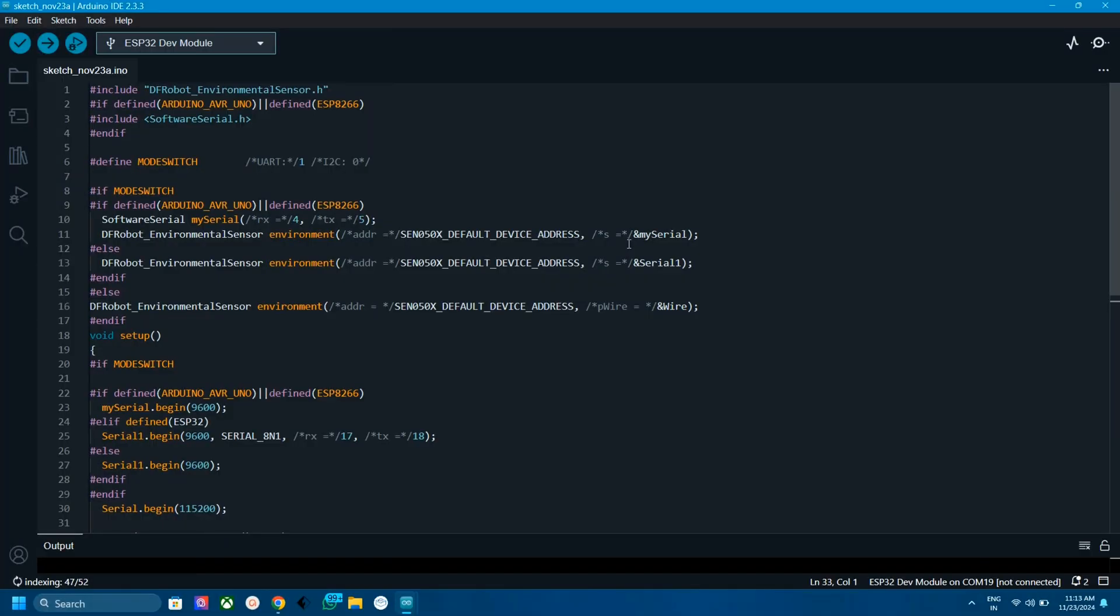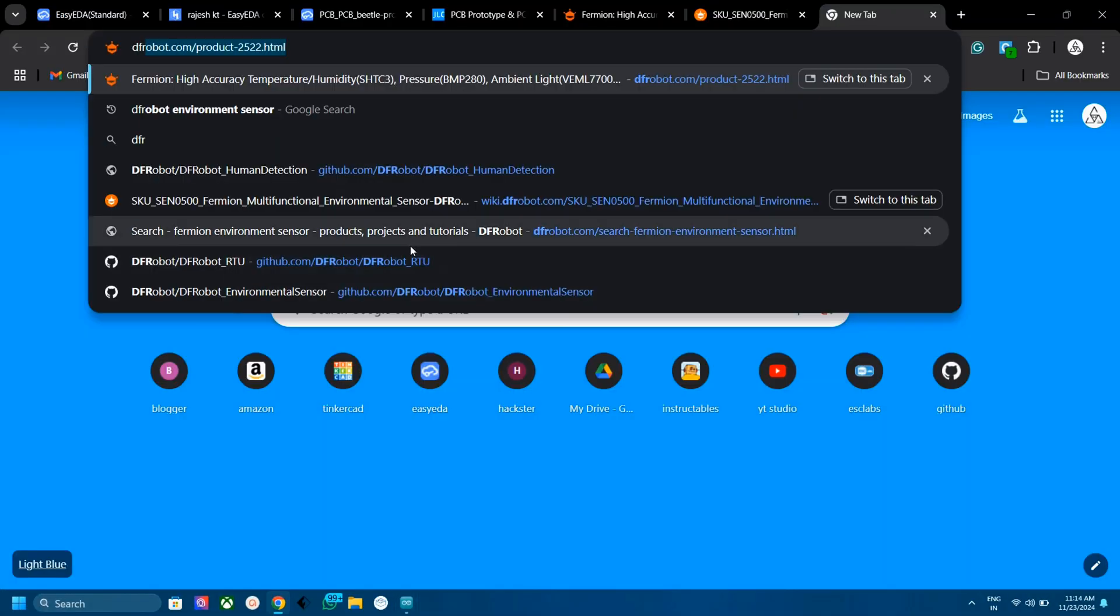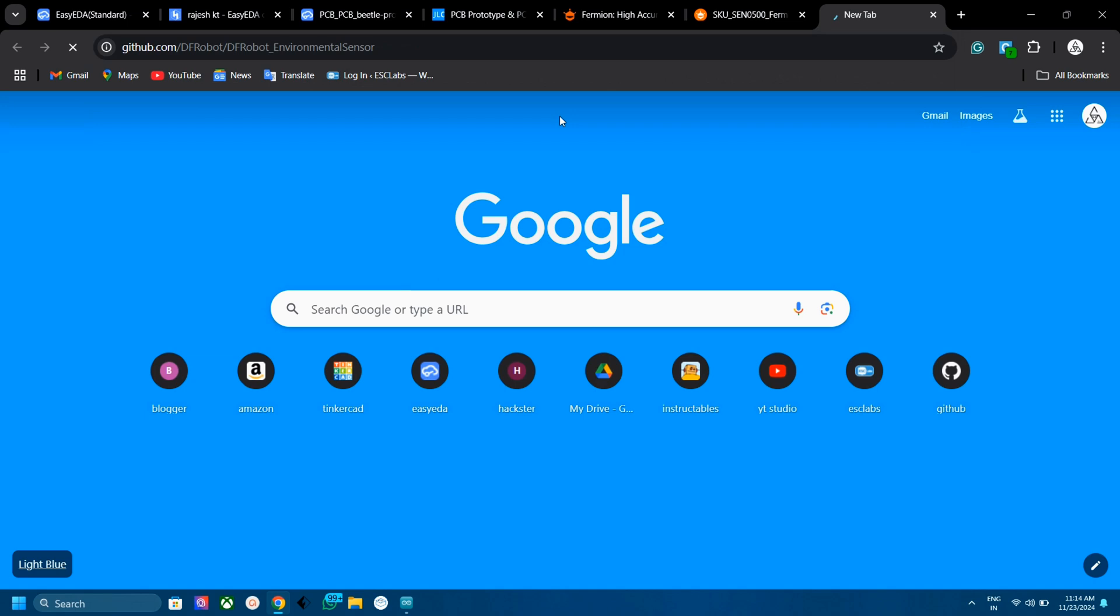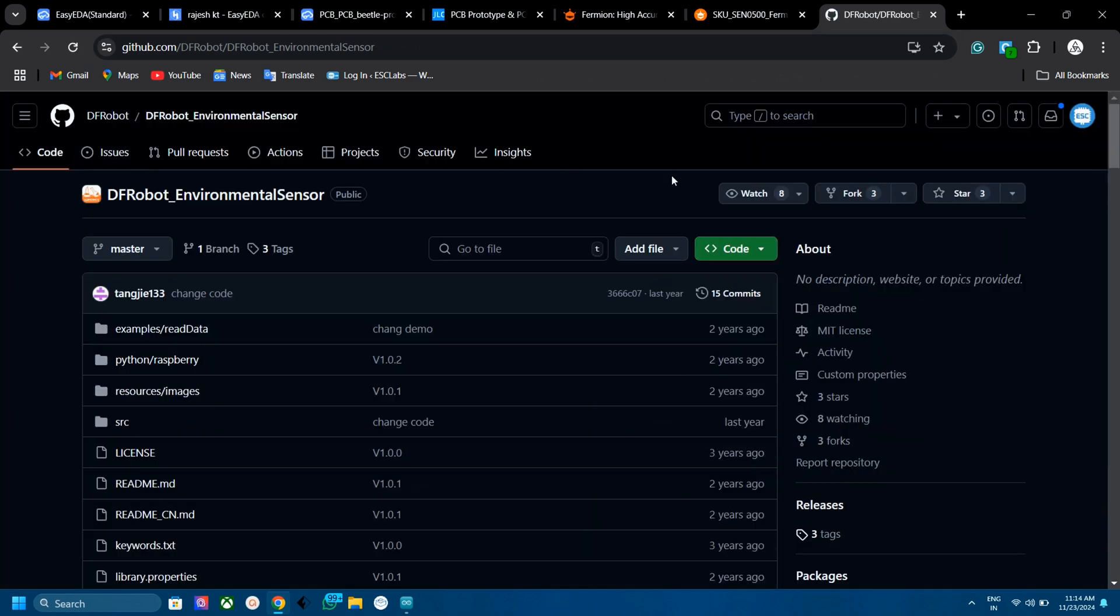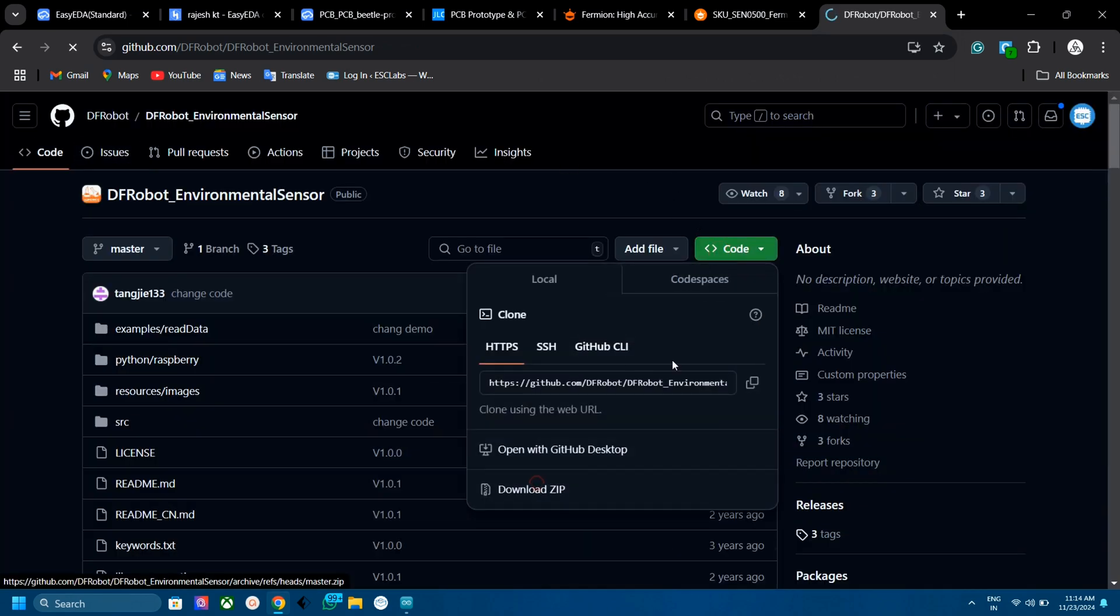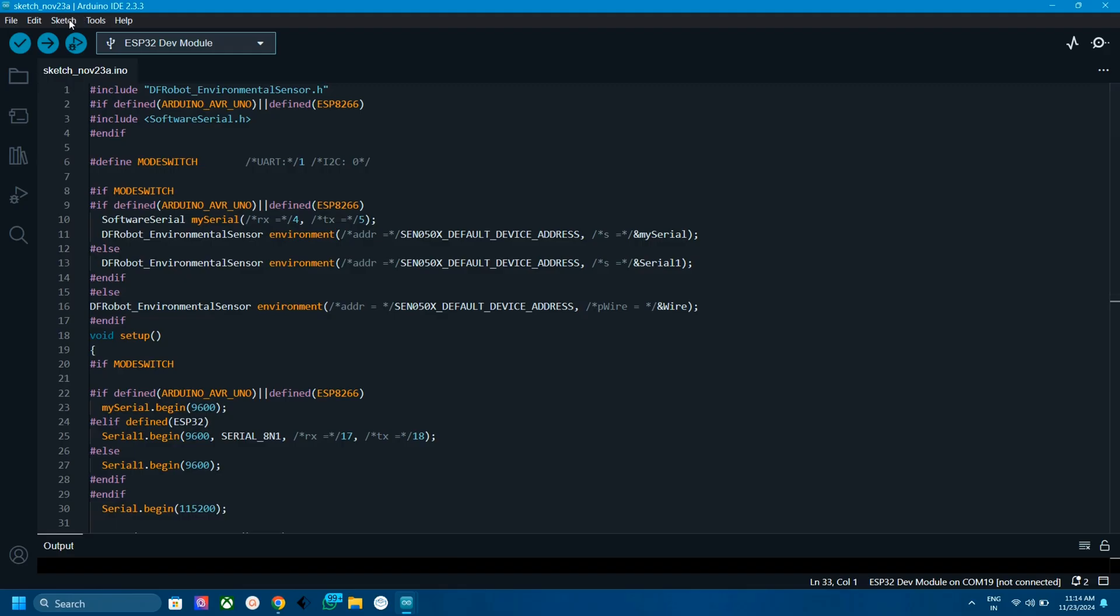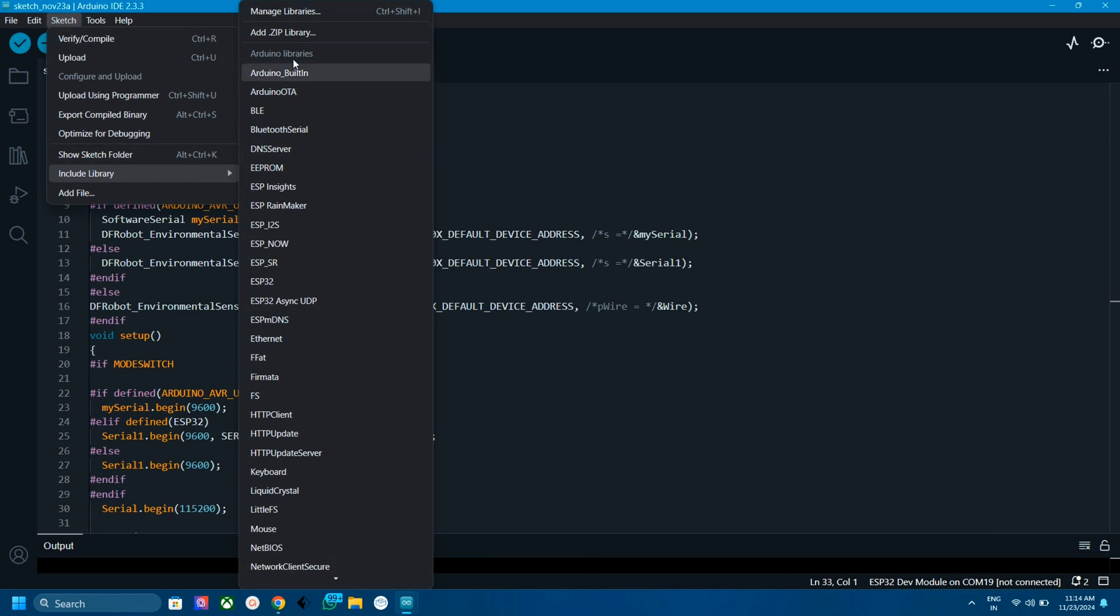Now open the Arduino IDE. We need two libraries for this specific module. So first download the dfrobot environmental library and dfrobot rtu library. You can use the links given in the video description for downloading. After downloading, add to the library section by going sketch, include library, add zip library.